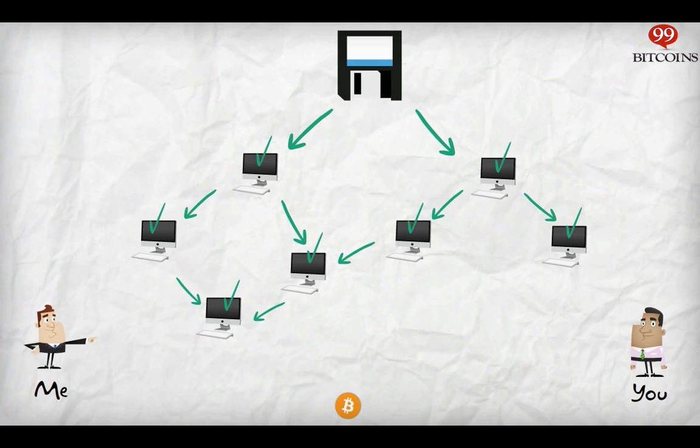At this point, you will see the transaction on your wallet as unconfirmed, even though the transaction is valid. It's considered unconfirmed or unordered, since it's just floating around the network.